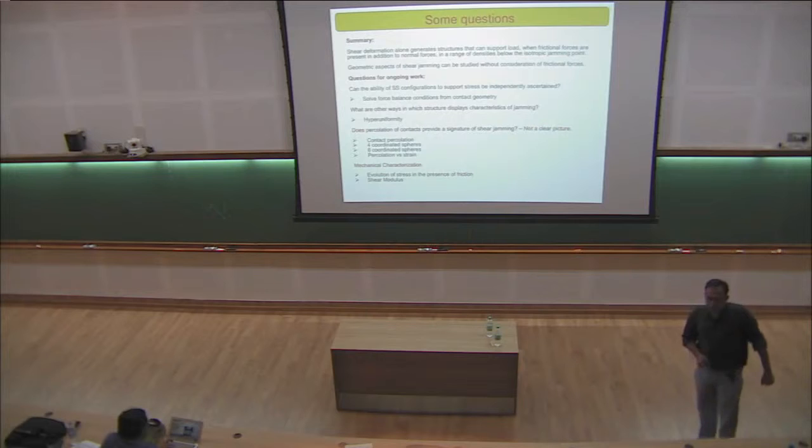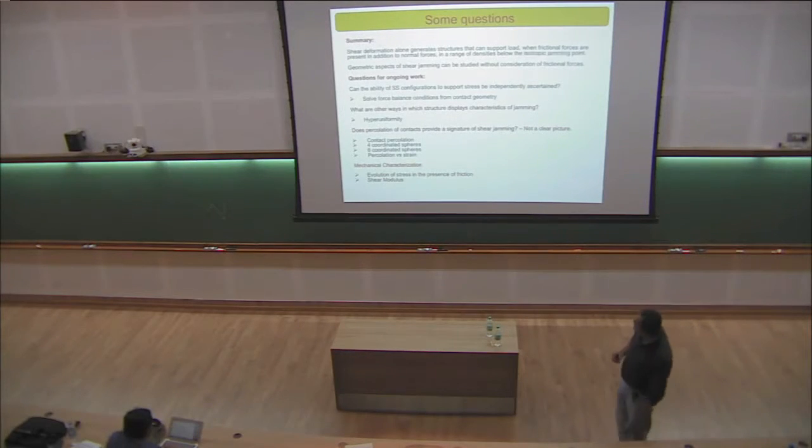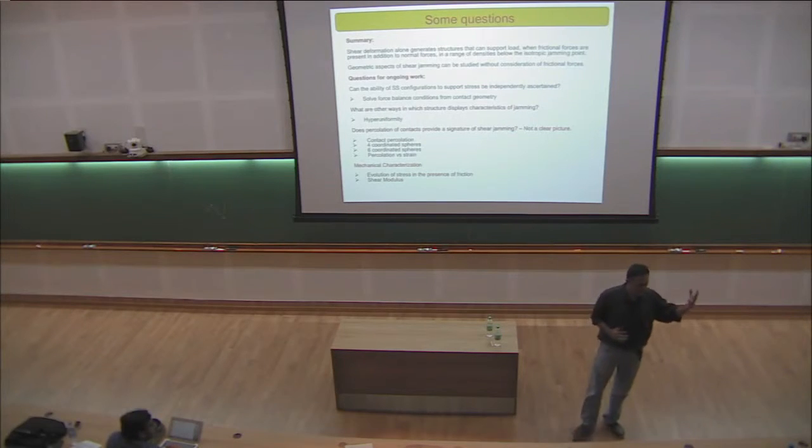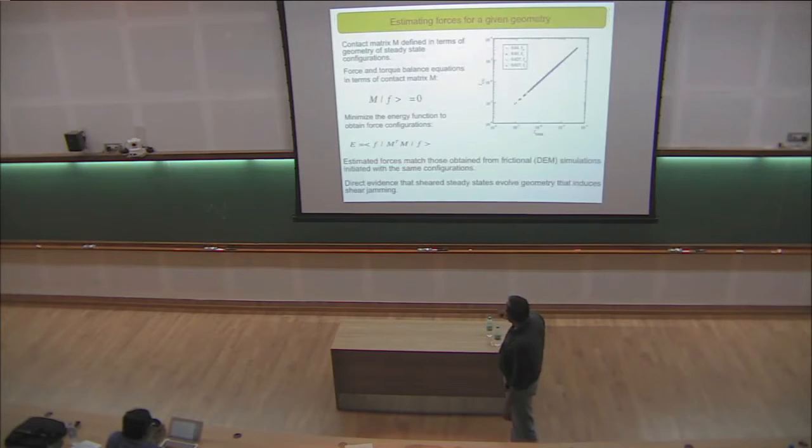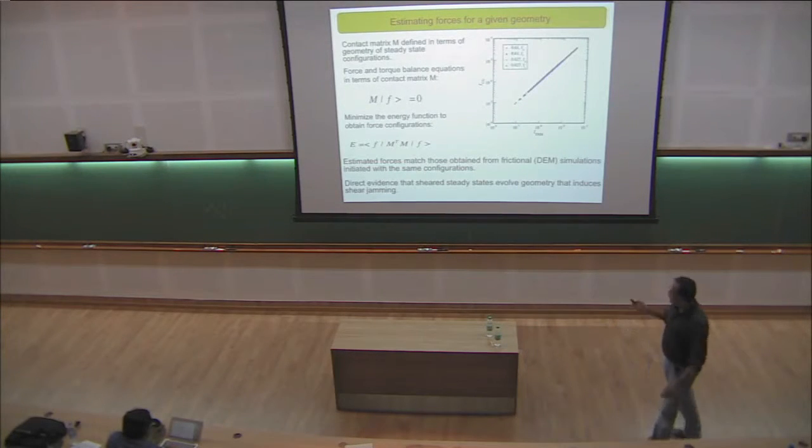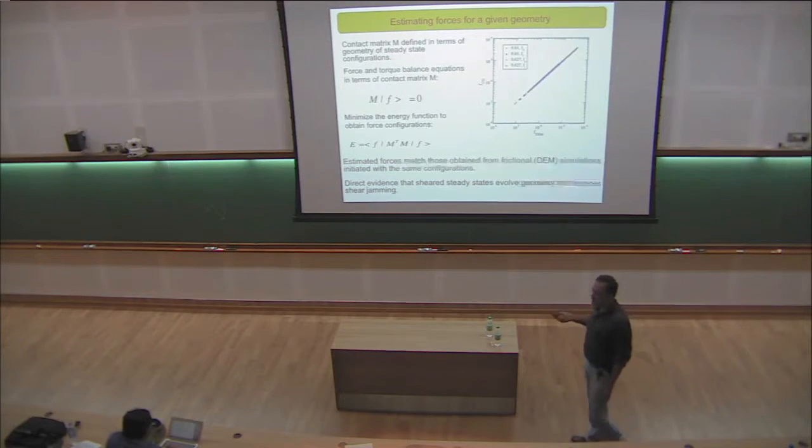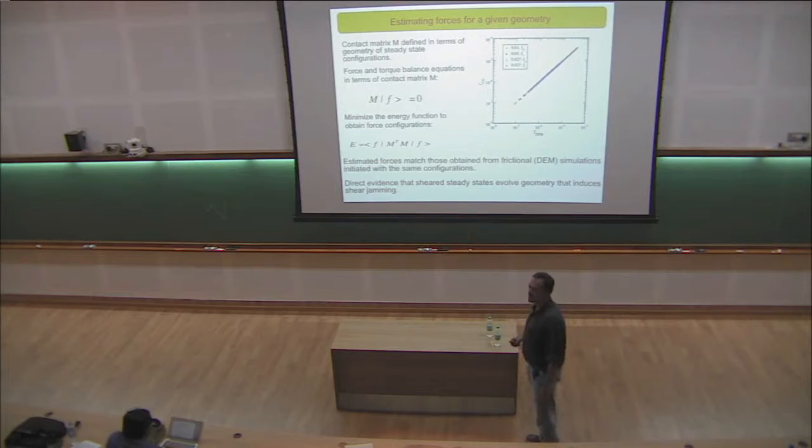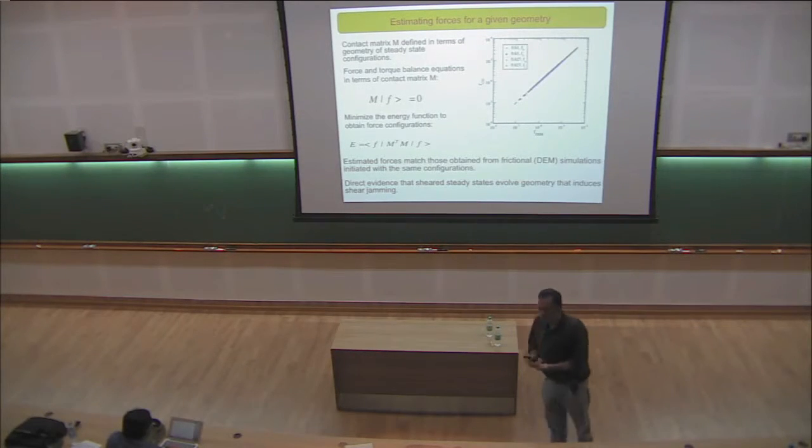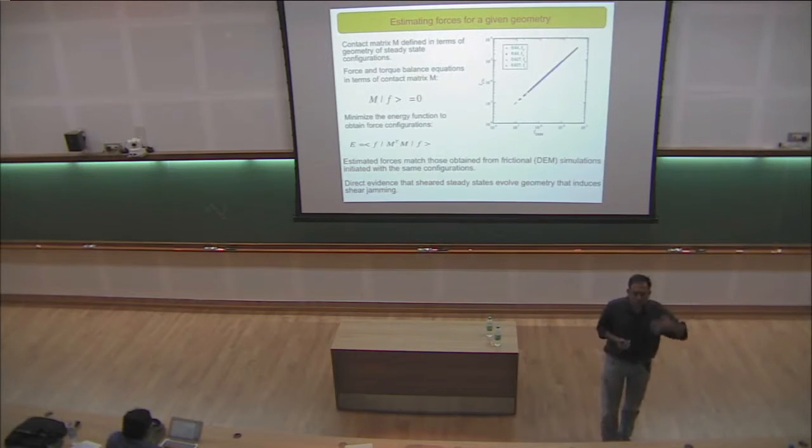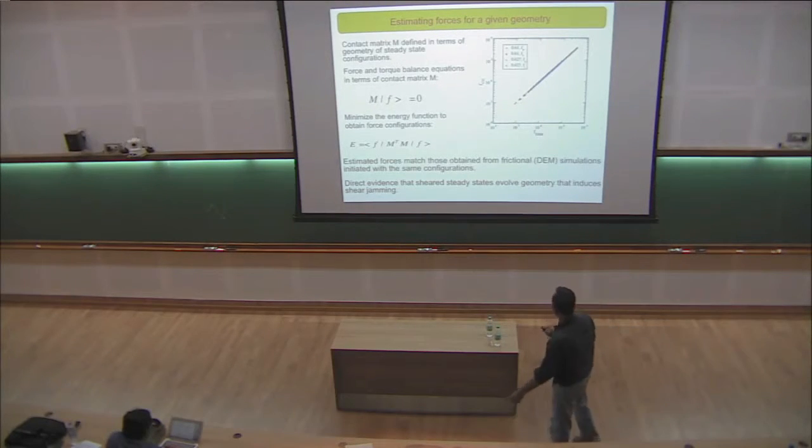Some questions we have been looking at now: if I just gave you the geometry without telling you where it came from, can you predict whether it can shear jam or not? The way to answer this is to write down the force balance conditions and ask if the geometry implicit in this matrix M, the contact matrix, is sufficient to generate solutions that are force balanced. What we show is indeed we can generate force balanced solutions, and we can compare it with what we obtain when friction is explicitly present and show that they are the same.